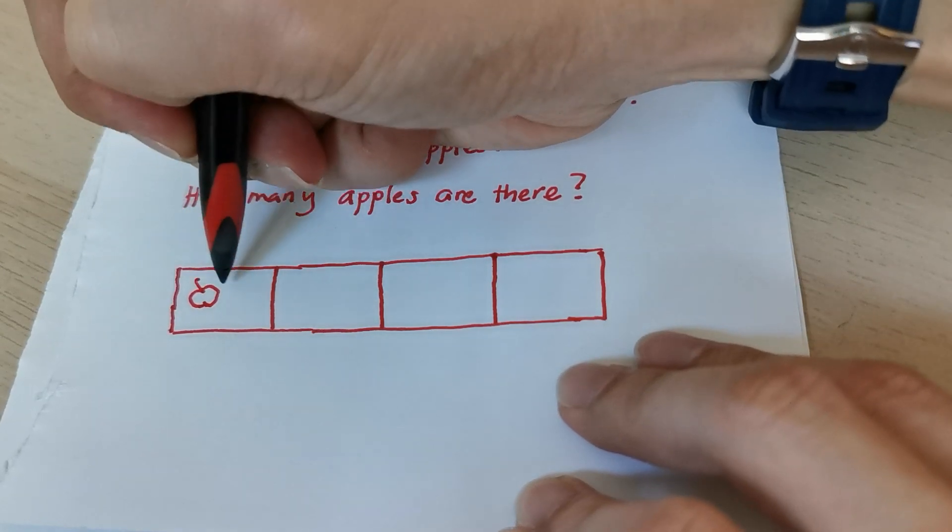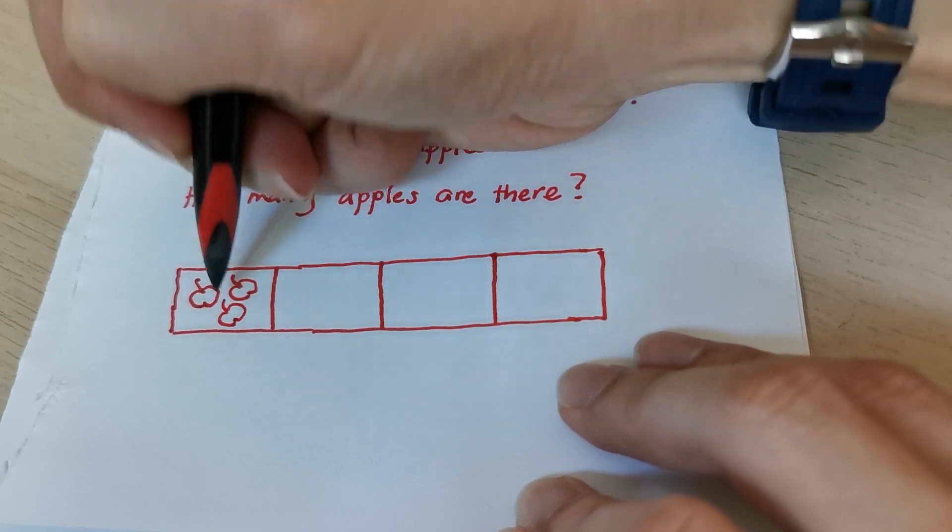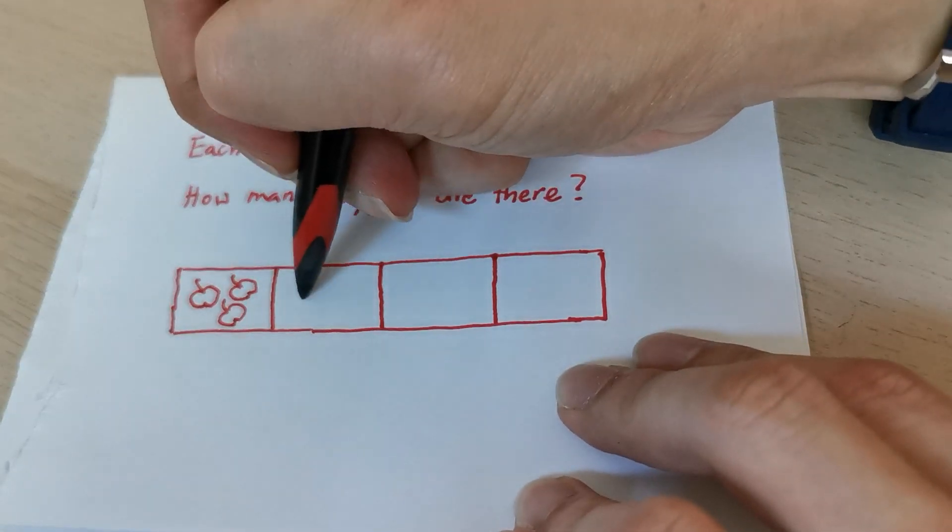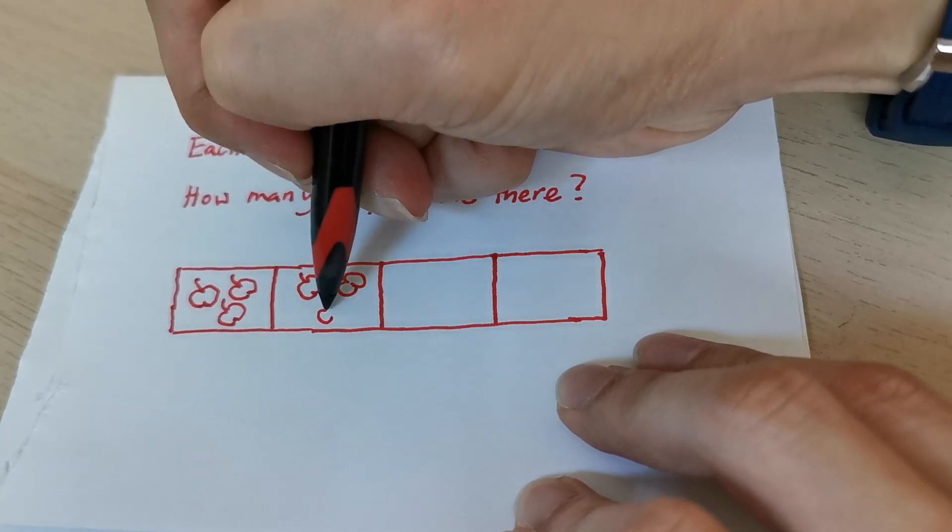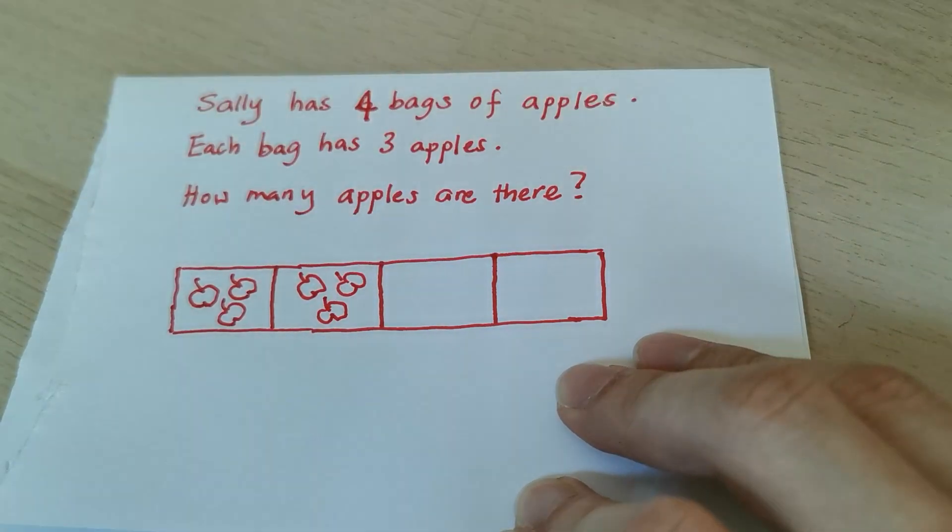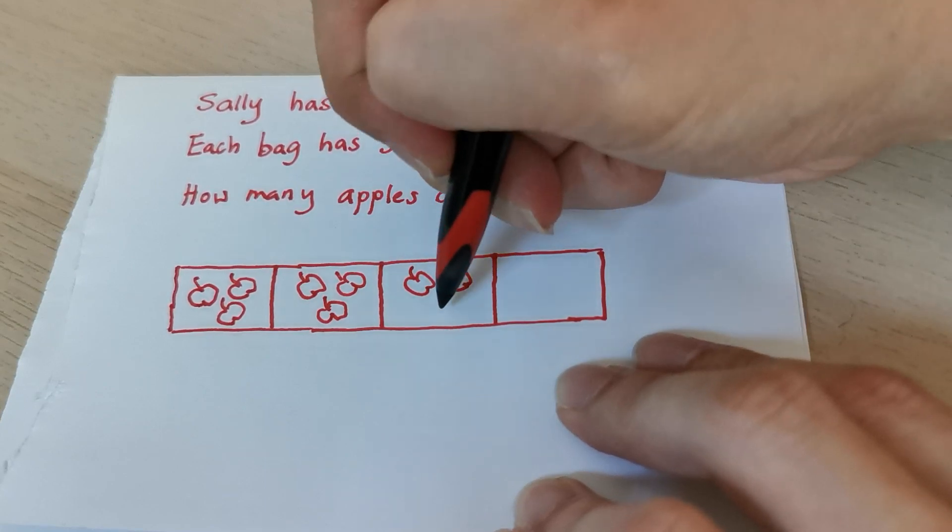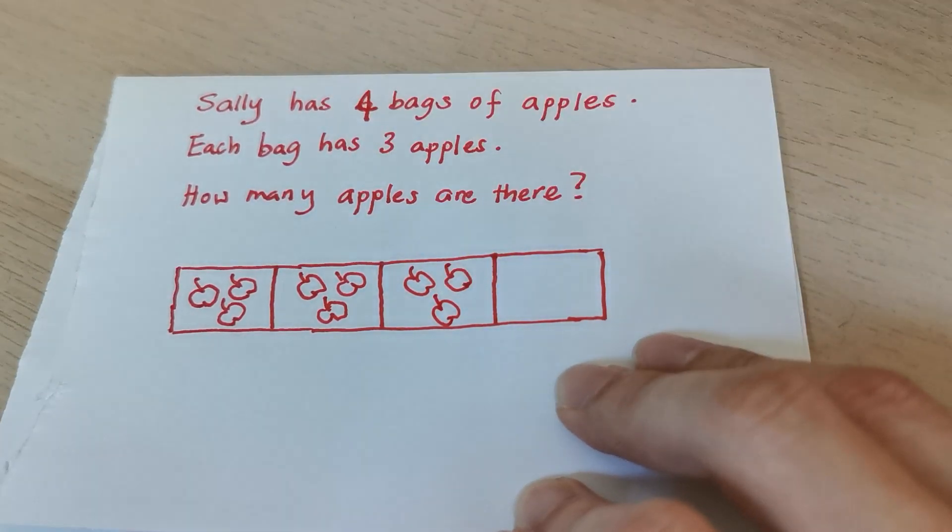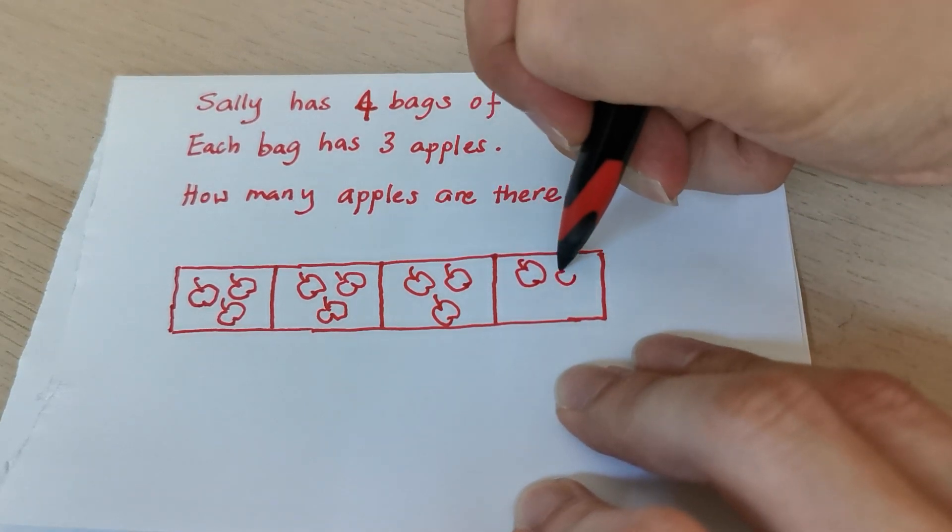So one, two, three. Hey, I know how to draw apples. Do you know how to draw that? Three. Okay, let's continue. Three. Okay, and finally, the last box, the last bag, I'm going to draw three more apples.